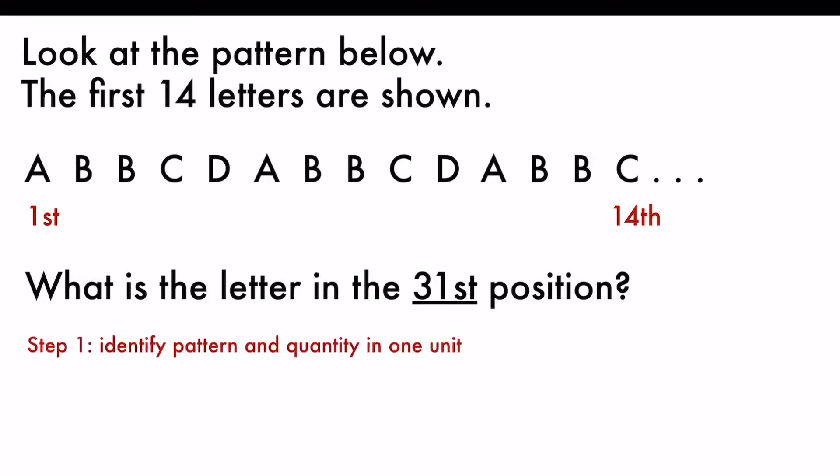There are three simple steps to solve the question. Step number one, identify the pattern and quantity in one unit. Let's go to the sequence. We have found out that 14 letters are given, and the sequence is A, B, B, C, D. And we see that A repeats again. So we will put a stop here. And so we have found the pattern of five letters repeating and so forth. So we have found the pattern. And quantity of letters in one unit is five. So that's step number one.